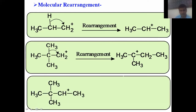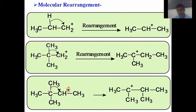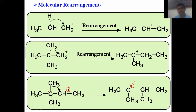Consider one more example: starting from a secondary carbocation, a methyl group can migrate toward the positively charged center. We then get a tertiary carbocation, which is more stable than the previous one. Thus, due to the drive for stability, a primary carbocation can be converted into a secondary or tertiary carbocation, while a secondary can be converted into a tertiary carbocation. These are examples of rearrangement reactions.